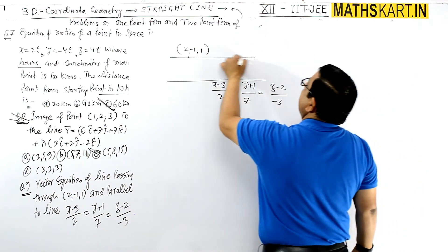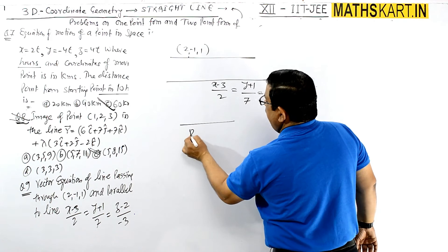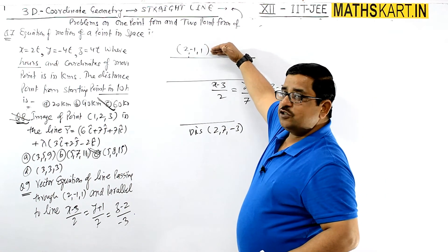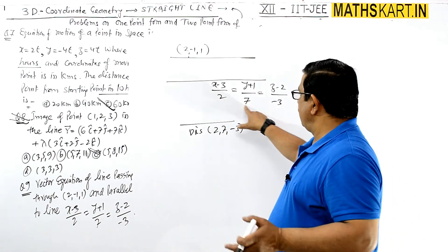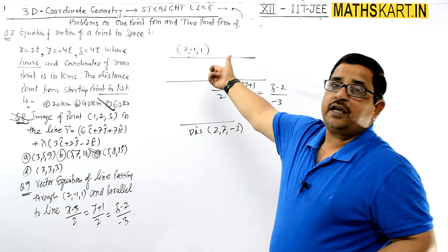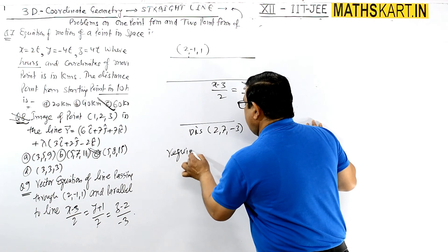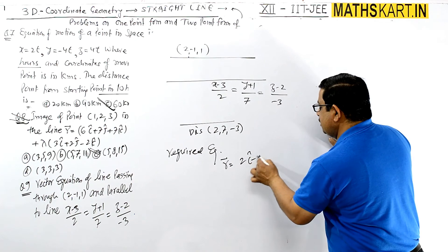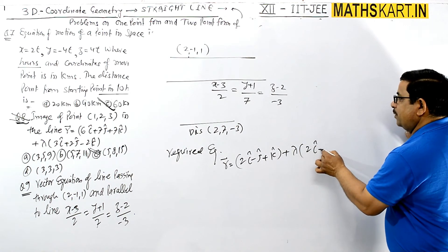The DRs of the given line are 2, 7, −3, so these become the parallel vector of the required line as well. The required vector equation is r = (2i − j + k) + λ(2i + 7j − 3k). We simply copy the parallel vector from the given line and write the equation with the given point.